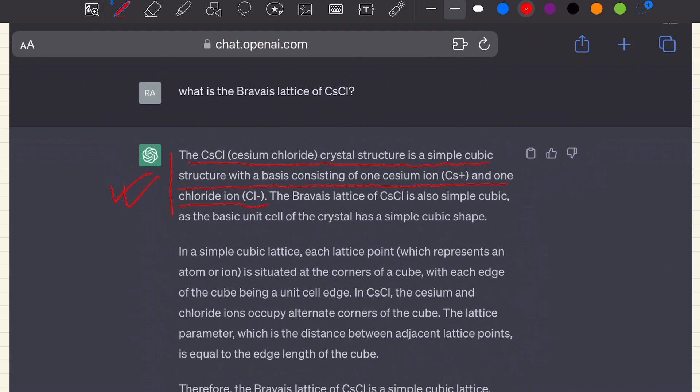For human intelligence, both questions are more or less equivalent. Is cesium chloride BCC? The answer expected is no. Of course, the answer can stop at just saying no, but you expect that if the person responding is an intelligent person, he should know that it's not only not BCC, but it is simple cubic.